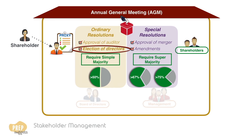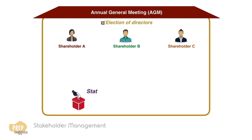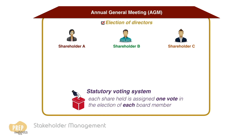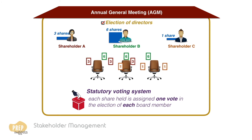When voting for directors, two types of voting systems are allowed. In a statutory voting system, each share held is assigned one vote in the election of each board member. So if the shareholders have three, six, and one shares respectively, and there are three seats to be filled, shareholder A will have three votes for each seat, B has six, and C has one. The issue with such a system is that a majority shareholder can effectively decide on every board seat.